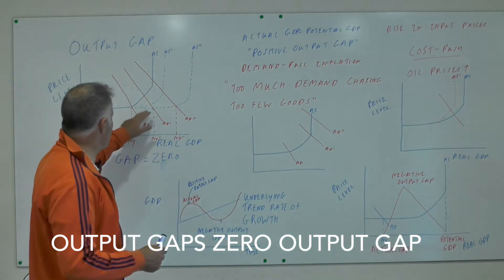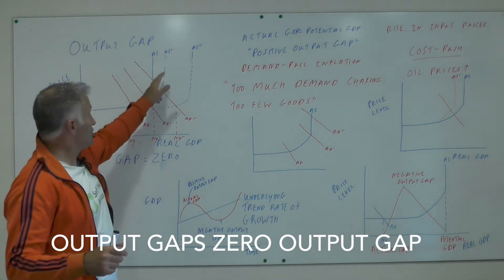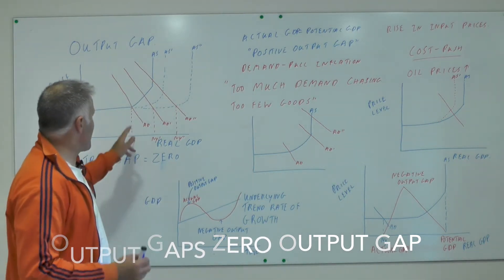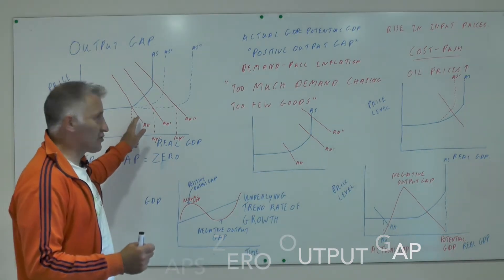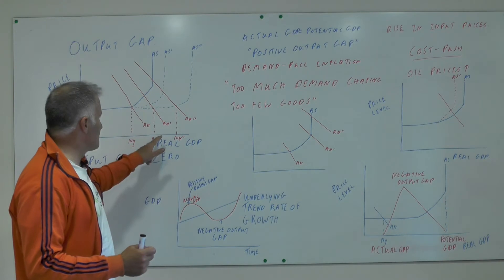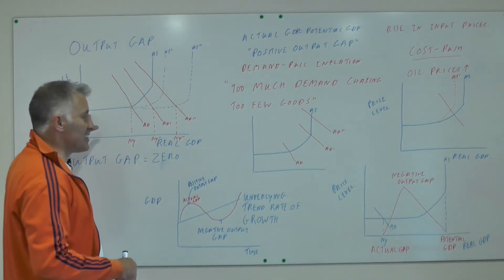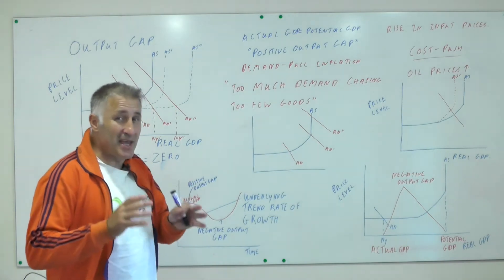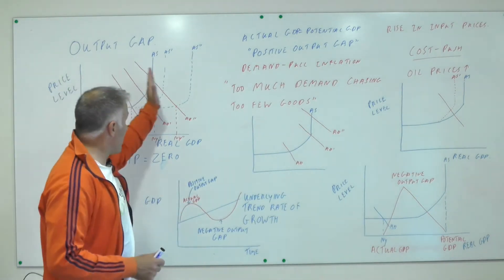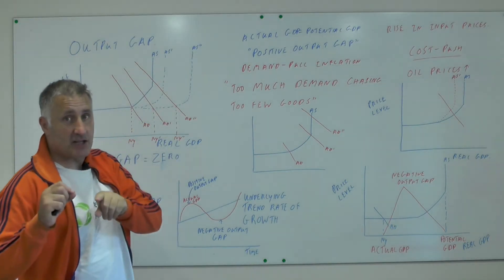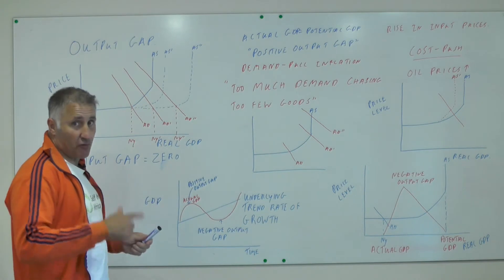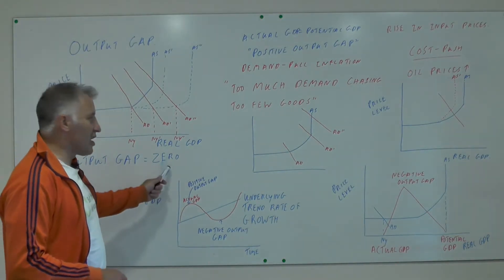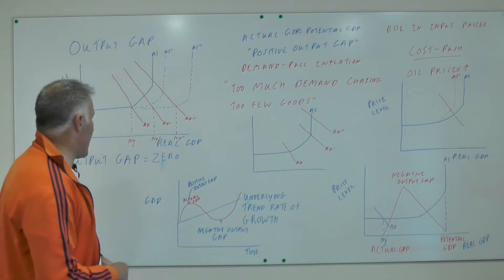What does a zero output gap mean? As the AS curve moves from AS to AS-dash to AS-double-dash — probably shifted out because of supply side economics — we also want to increase aggregate demand at the same rate, from AD to AD-dash. Notice that the price level stays the same. This is the underlying trend rate of growth, and policymakers use monetary or fiscal policy to increase AD at the same rate, keeping the output gap at zero.